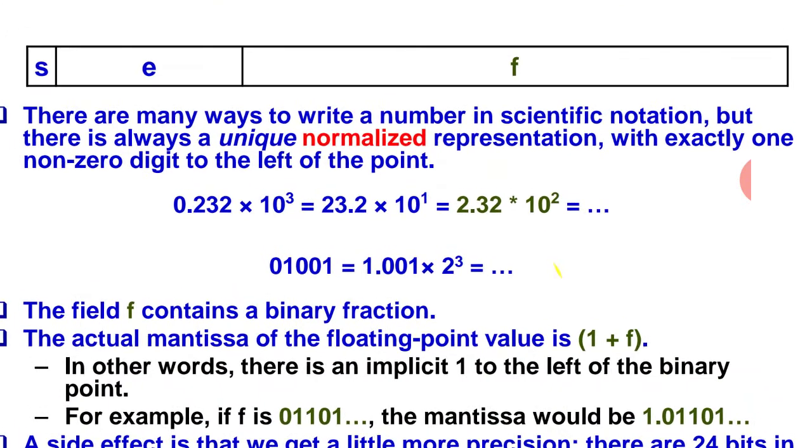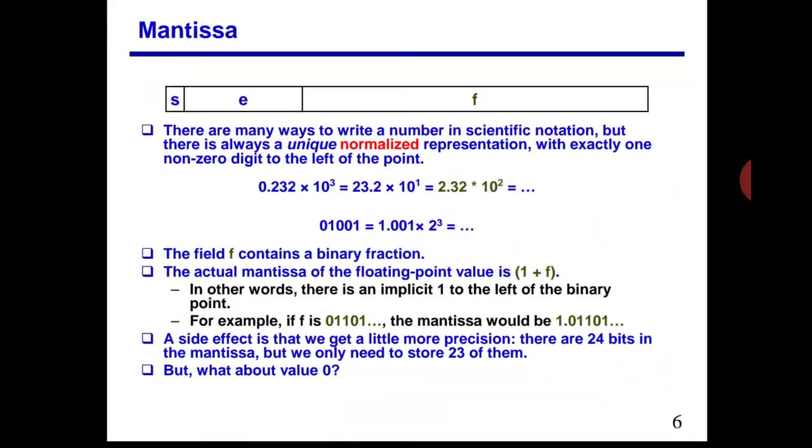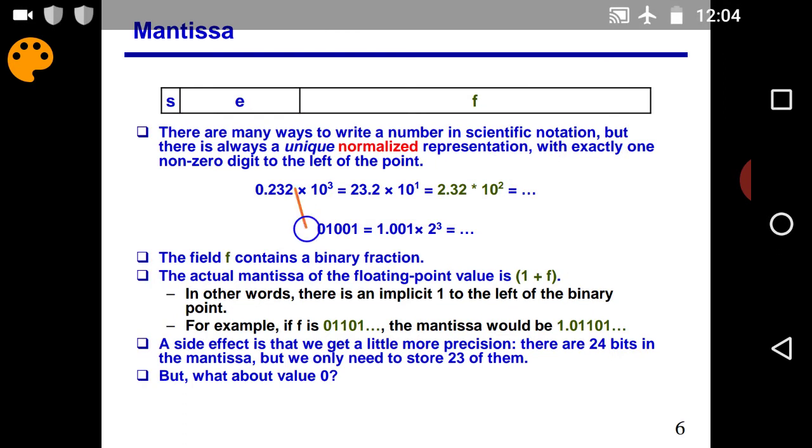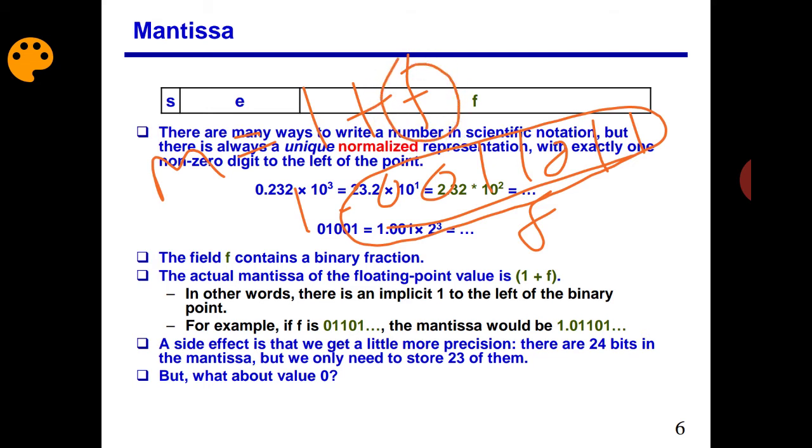There are many ways to write a number in scientific notation. Normalized representation is the main one. The field f contains a binary fraction. In the last case, we are not using the actual values. Suppose you had 1.001101 something. This is the fractional part. Mantissa equals 1 plus f, one plus f. So it will be 1 plus .001101, meaning when it is computed, when read from memory, f means fraction is automatically considered after decimal point.